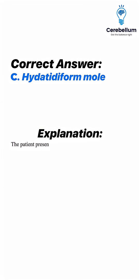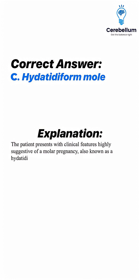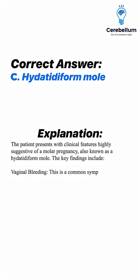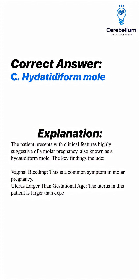The patient presents with clinical features highly suggestive of a molar pregnancy, also known as a Hidatidiform Mole. The key findings include vaginal bleeding, which is a common symptom in molar pregnancy, and a uterus larger than gestational age. The uterus in this patient is larger than expected for 10 weeks of gestation, which is a classic feature of a molar pregnancy.